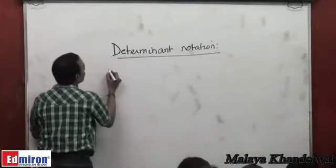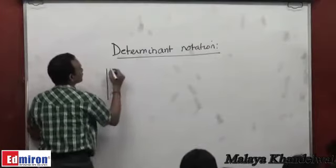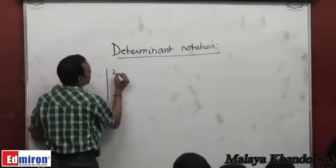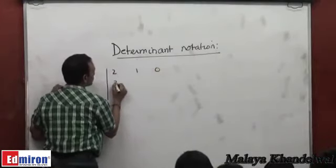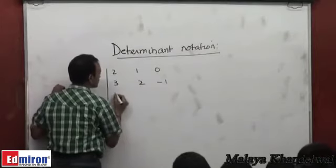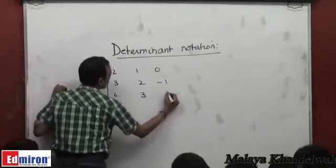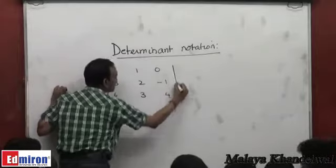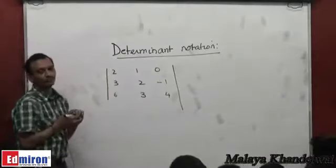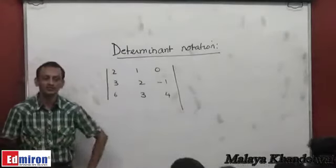So very quickly, just to get hands on, all of you, independently find the value of the determinant: 2, 1, 0; 3, 2, minus 1; 6, 3, 4. Please find the value of this determinant, all of you.